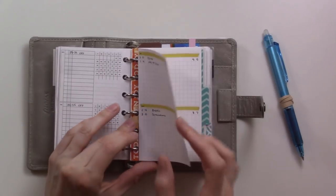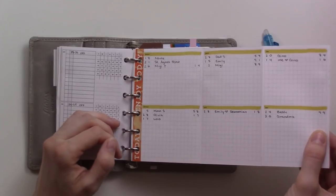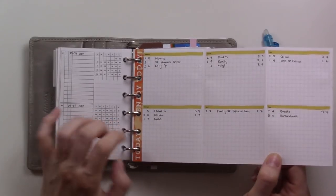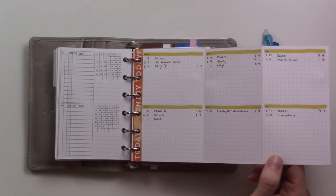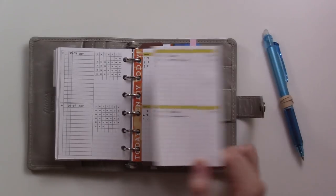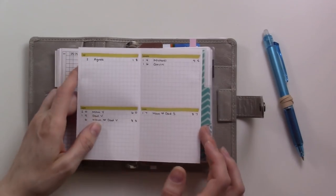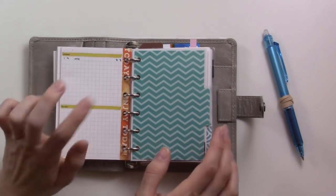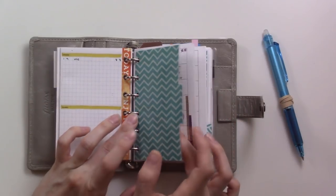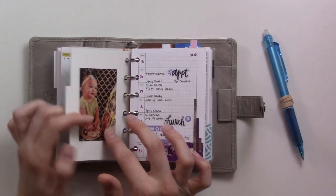Anyway, this section here is for birthdays and anniversaries and I added some washi tape to it and I decorated it a little bit because it was boring. I just really just added a stripe of mild liner to the top, but I just pull this out every month also when I do my setup and that tells me what's coming up.